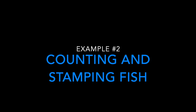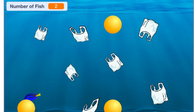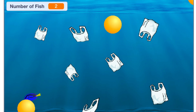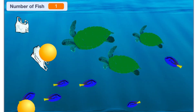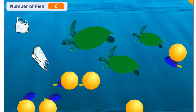In this project, the sprite checks for the blue color of the fish. The project uses a variable to count the fish as well as the stamp to show their locations. Note that the sprite can move up and down instead of moving across the stage.